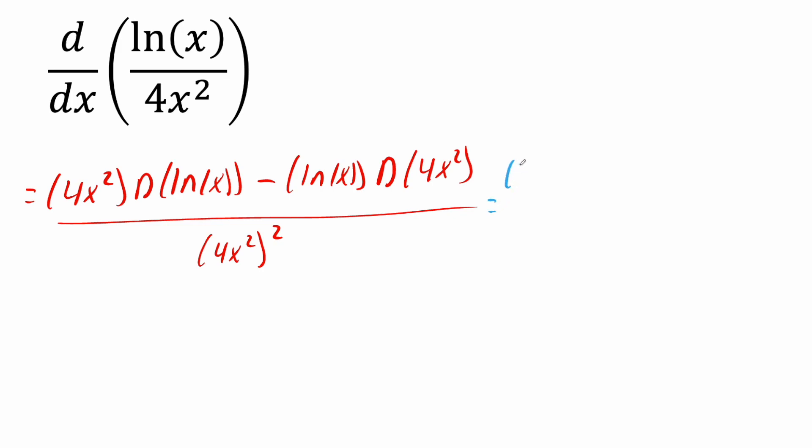So we'll keep our 4x squared, the derivative of ln(x) is 1 over x, minus ln(x), and then the derivative of 4x squared is going to give us 8x, divided by.